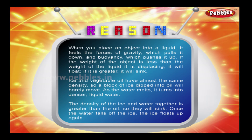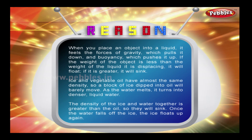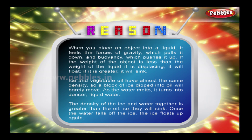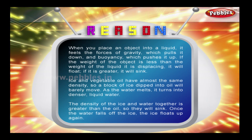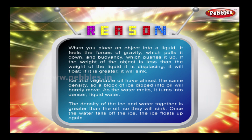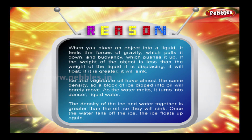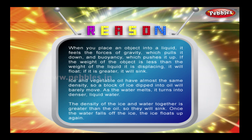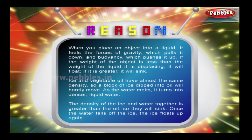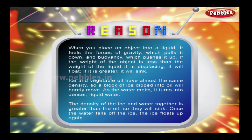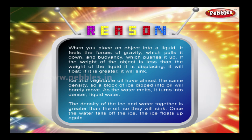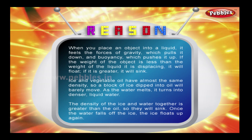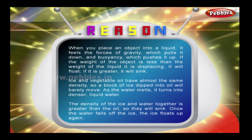Ice and vegetable oil have almost the same density. So, a block of ice dipped into oil will barely move. As the water melts, it turns into denser liquid water. The density of the ice and water together is greater than the oil, so they will sink. Once the water falls off the ice, the ice floats up again.